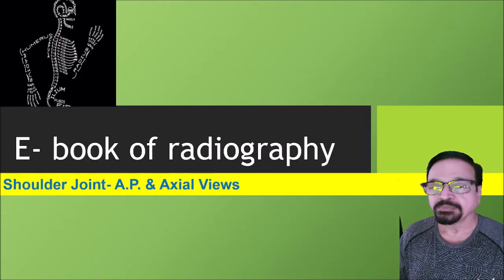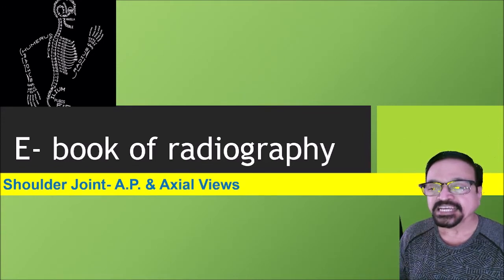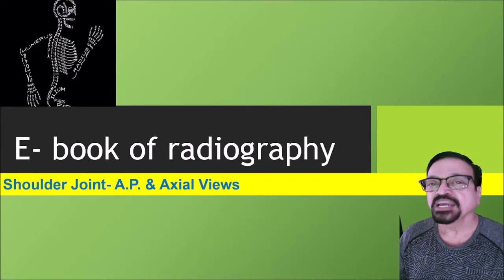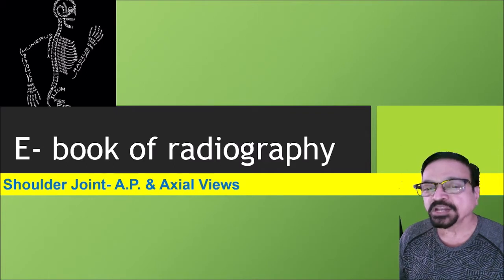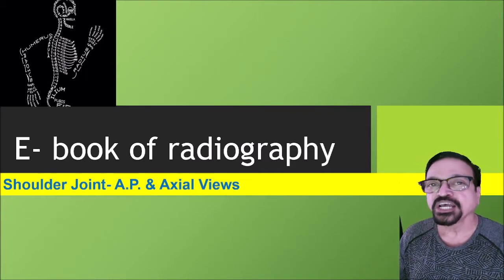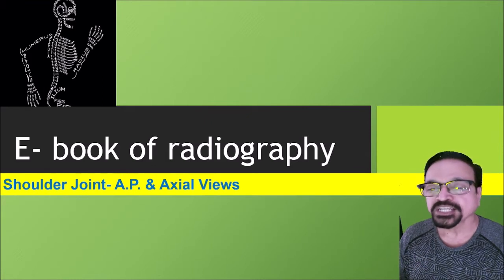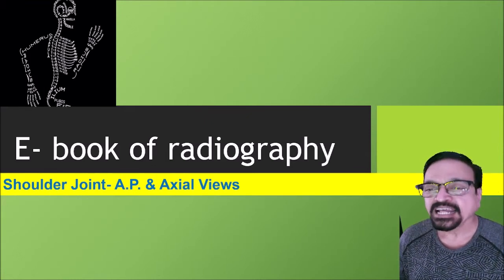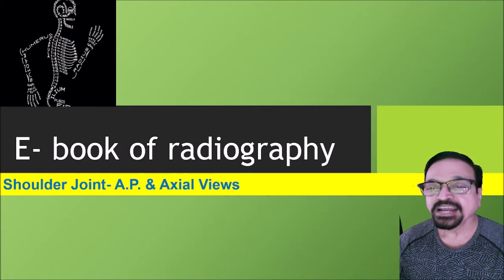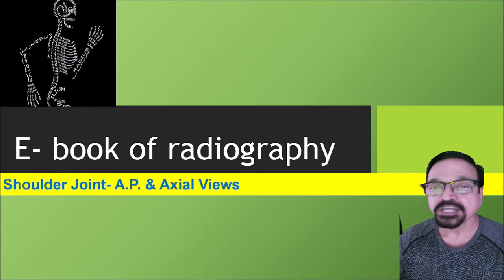Hello and welcome. I am Dr. Anik Joshi and we are in the series that is e-book of radiography. In this video, we are going to see shoulder joint projections. Shoulder joint has got basically two projections: one is AP and second is axial, and there are different ways in which both can be taken.